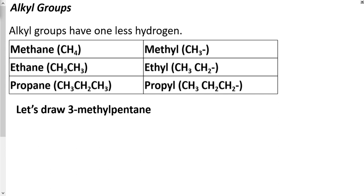Let's talk about alkyl groups. Alkyl groups usually have one less hydrogen than the corresponding hydrocarbon group. For example, methane has one carbon and four hydrogens (CH4), so the methyl group would have one less hydrogen — three hydrogens instead of four. The open bond shown is not a minus sign; it represents an available bond that will be used when the alkyl group attaches.